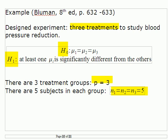Just for emphasis: the null hypothesis is that all treatments will give the same results — that the mean from each treatment group will be essentially the same. The alternative is that at least one will be different. Of course, finding that all three treatments give the same result is also interesting and informative, so the null hypothesis does provide useful information as well.